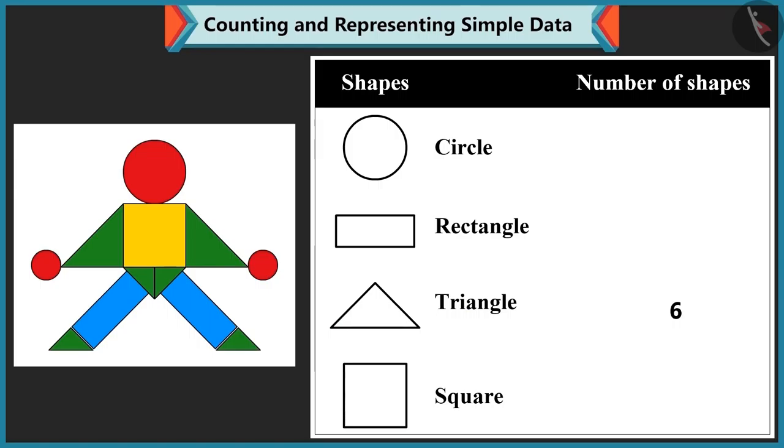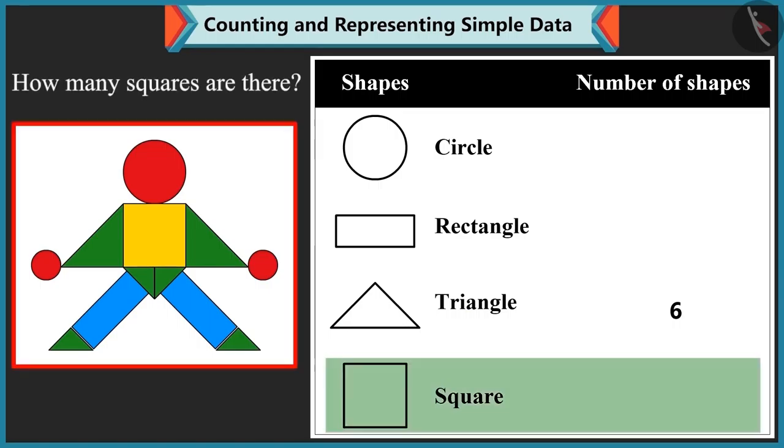Well done. Now tell me how many squares are there? One, two, three. Oh, no, Bubbly. There is only one square here.